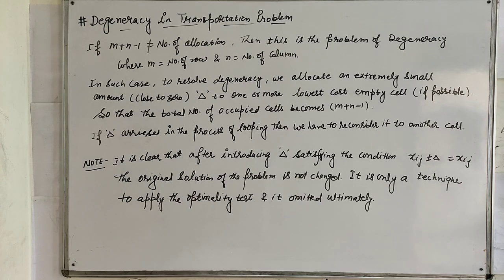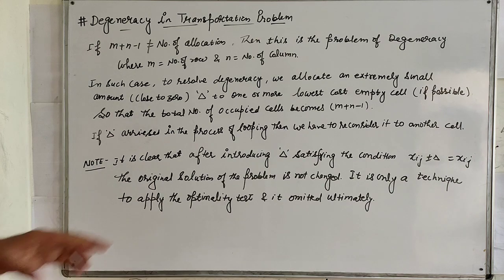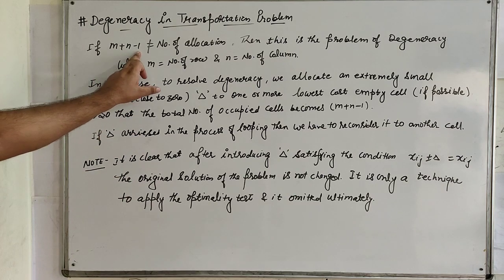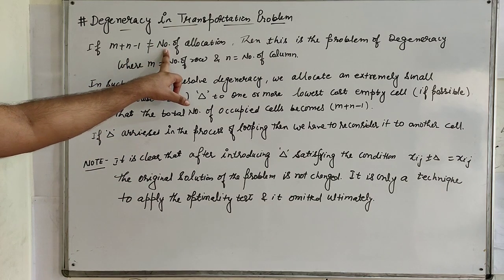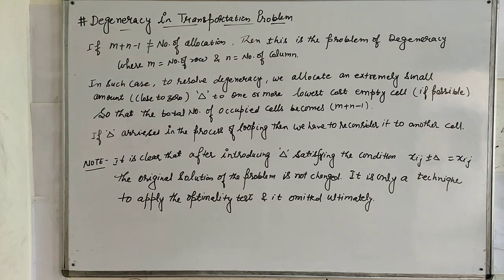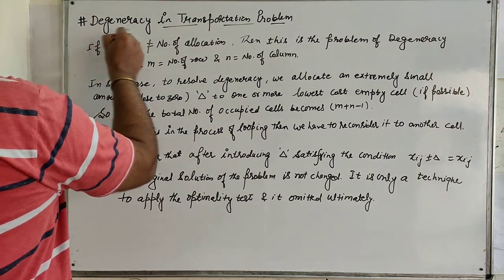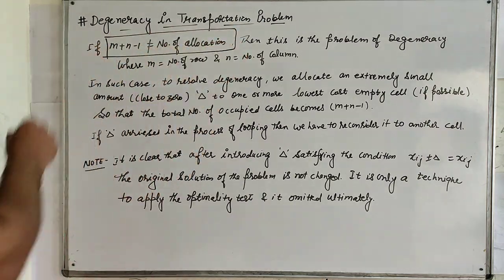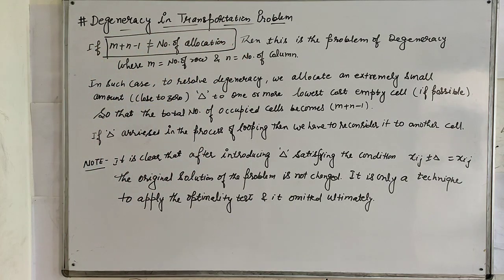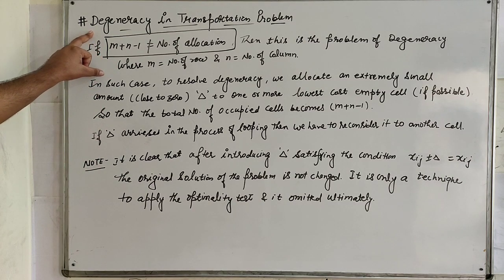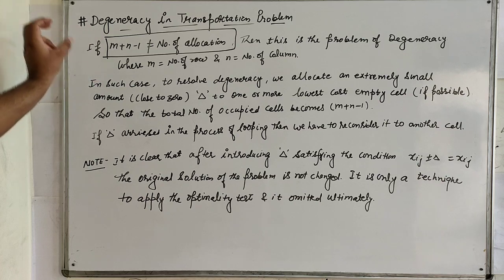Now, the problem occurs when we want to find the optimal test and the condition arises where M plus N minus 1 is not equal to the number of allocations — that is, the basic condition to test the optimality does not exist. This kind of problem is known as degeneracy in the transportation problem.